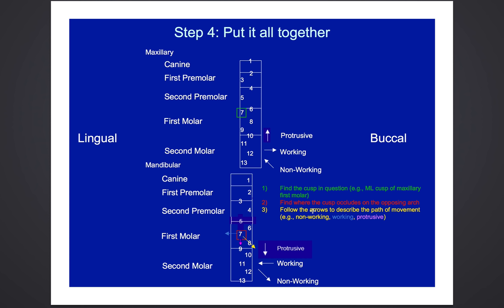Then you follow the arrow to describe the path of movement. If it asks for a non-working movement, you'd move down to the right. If it asks for a working movement, we'd move over to the left. So if the question asks what structure this cusp passes through in a working movement, we'd come here and see it passes through the lingual groove.